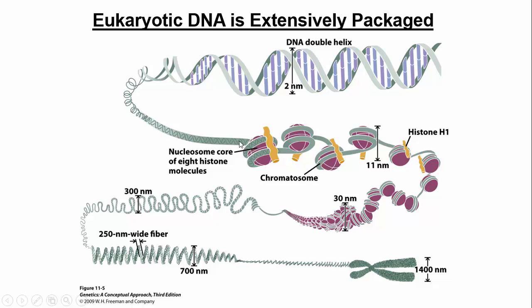So here we have naked DNA. If you go ahead and coil it further, the DNA starts to coil around these spheres. The sphere itself is a bunch of histone proteins, and we call it a nucleosome core. Once we wrap DNA around it, this is the first level of compaction of eukaryotic DNA, and we say it's a nucleosome. Once you add the extra histone H1 protein on here, then we call it a chromatosome.